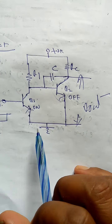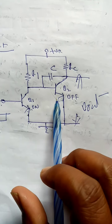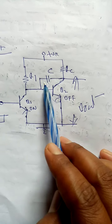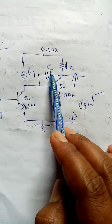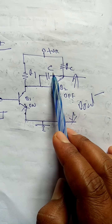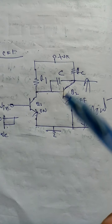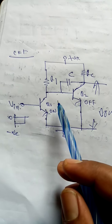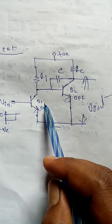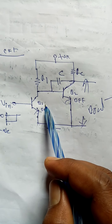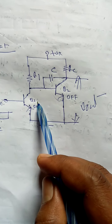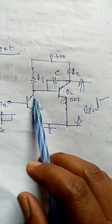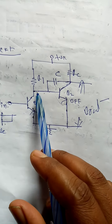Q1 on means it becomes a short circuit; Q2 off means it is an open circuit. With this, capacitor C starts charging up to VCC. Now if we apply a negative polarity pulse, Q1 transistor becomes reverse biased — meaning it becomes an open circuit.